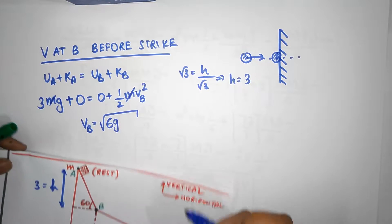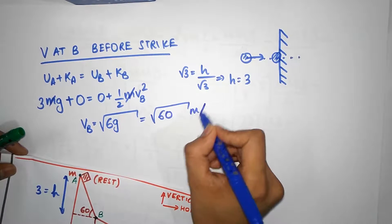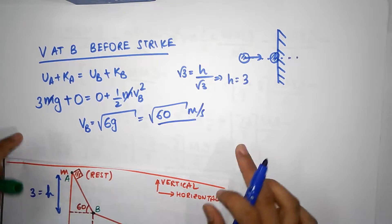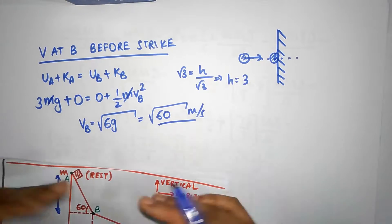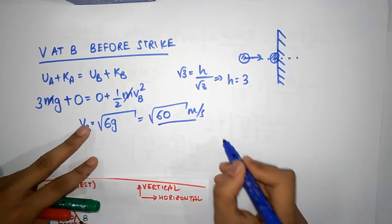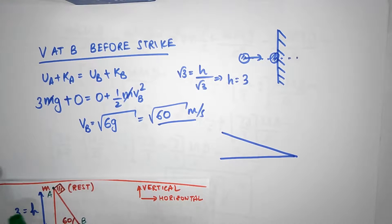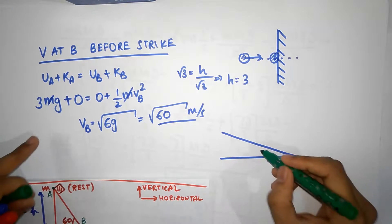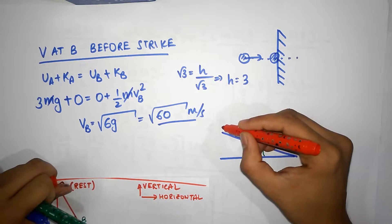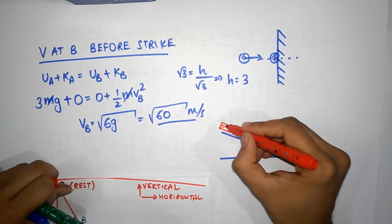They've asked us to take G as 10, so that's root 60 meters per second. Now, root 60 meters per second was one of the options, but remember this is before the strike and the question asks for after the strike. Now we have to be careful. Here is the plank — the slide — and this angle is 30 degrees. Our block is sort of floating in air a little bit; it has a velocity directed this way, coming in this direction.